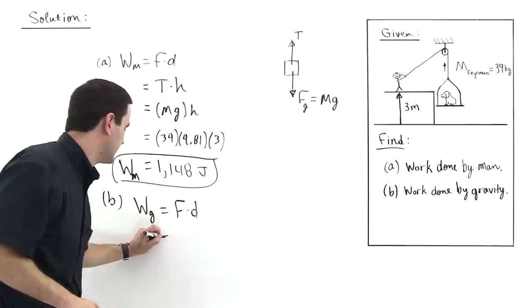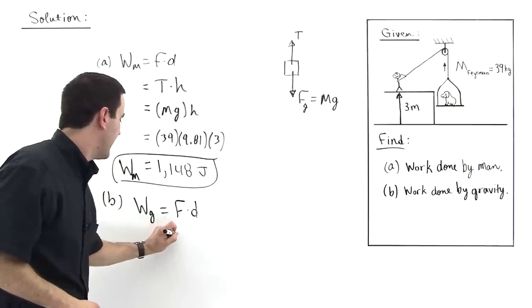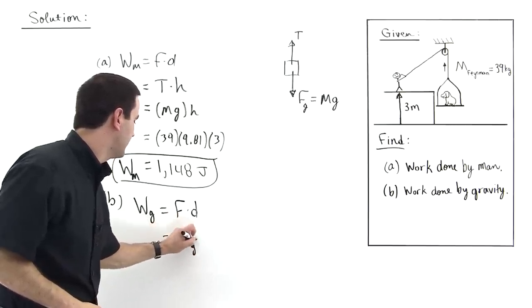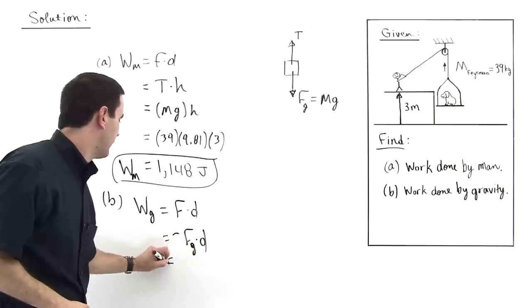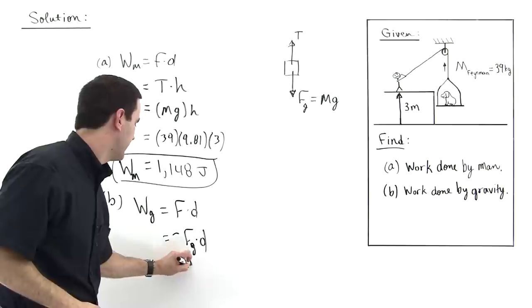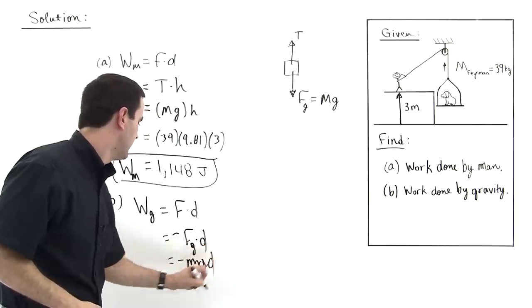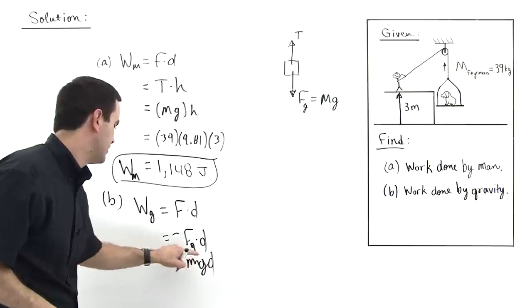And so we can say that this is equal to negative the force due to gravity times the distance, and then we of course know that this is negative Mgd, where the force due to gravity is Mg.